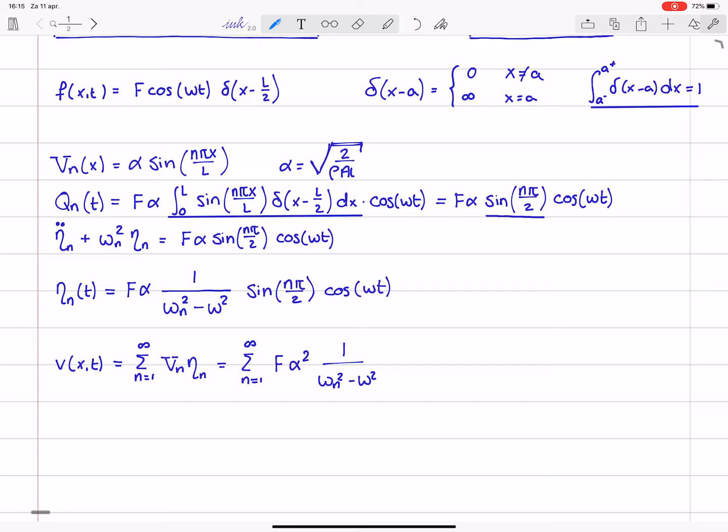f alpha squared because vn also contains an alpha times this fraction, this ratio times the sine of n pi over 2 times the mode shapes, these are signs of n pi x divided by L times the cosine of